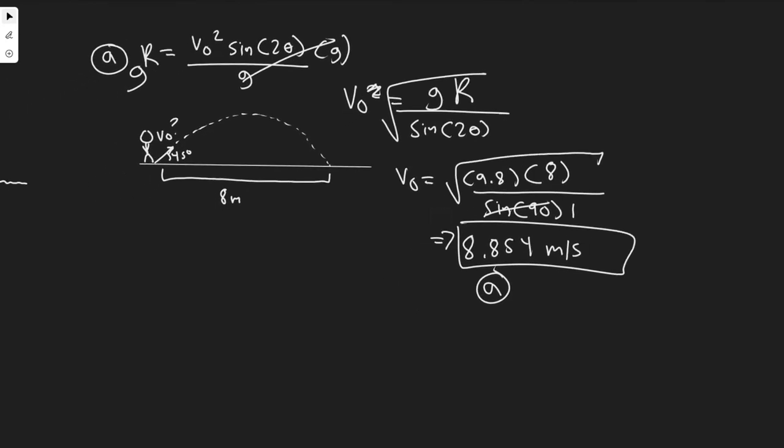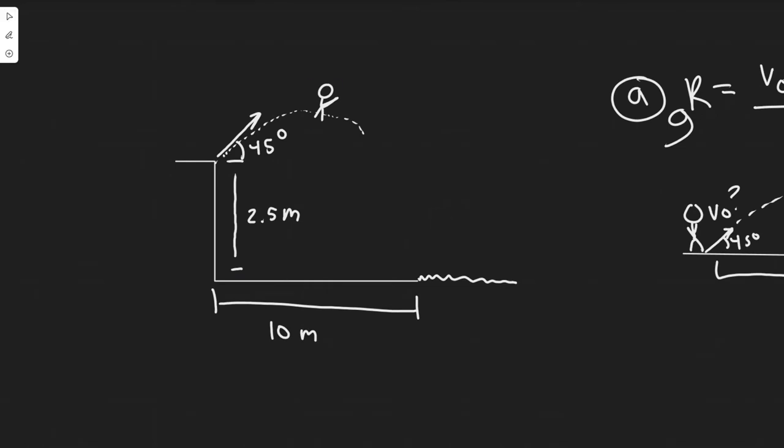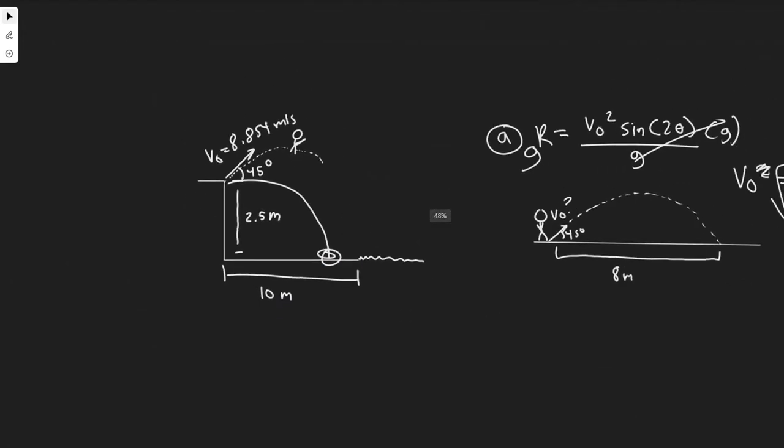Now we actually have what we need in order to solve B. So B is going to be this diagram right here. Now we know V₀, or their takeoff speed, is 8.854 meters per second. We're trying to figure out how far they're going to land. We want to see whether they go short of this, over it, or right on it. This is a two-dimensional kinematic problem.